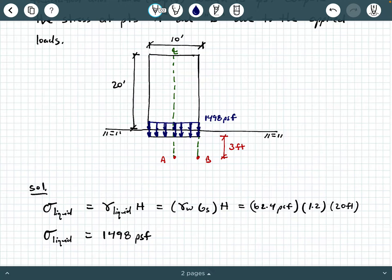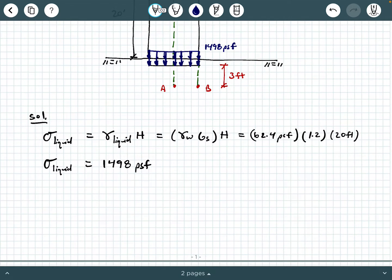Now in addition to that, we have to account for the stress caused by the weight of the tank and the foundation. So I'm gonna call that σ_DL for dead load of the tank and the foundation. Together we said that that was 15 kips or 15,000 pounds, and we're gonna spread that over the footprint of the tank.